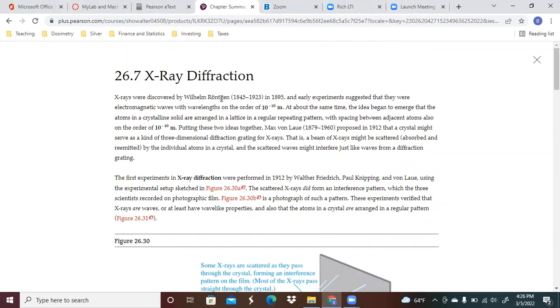And these were discovered and X-rays were of course discovered by William Röntgen in 1895 and this suggested they were electromagnetic waves with wavelengths on the order of 10 to the minus 10 meters.